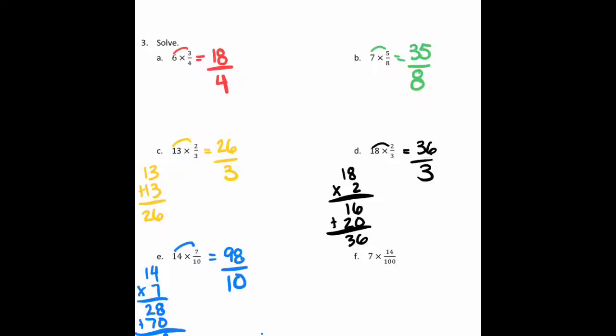And then on F you have 7 times 14. Well, we just did that fact, so I'm just going to say 14 times 7 is 98, because we just did that one. And then you'll get 98 hundredths.